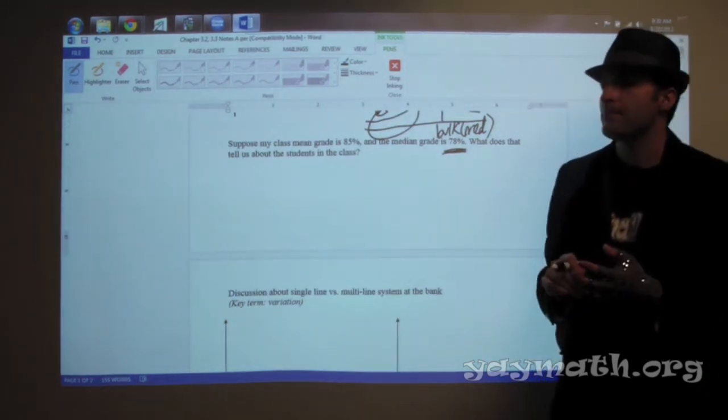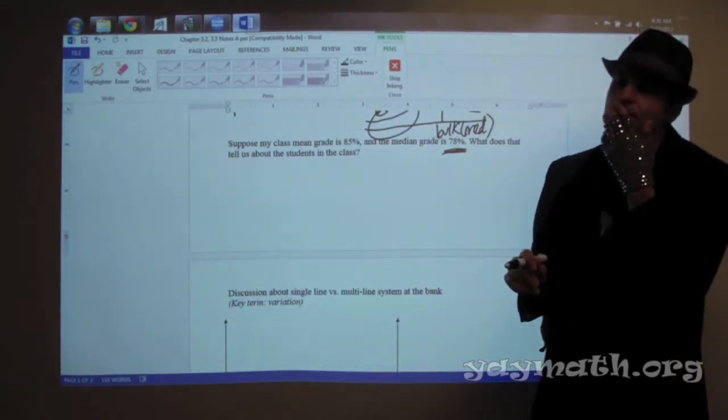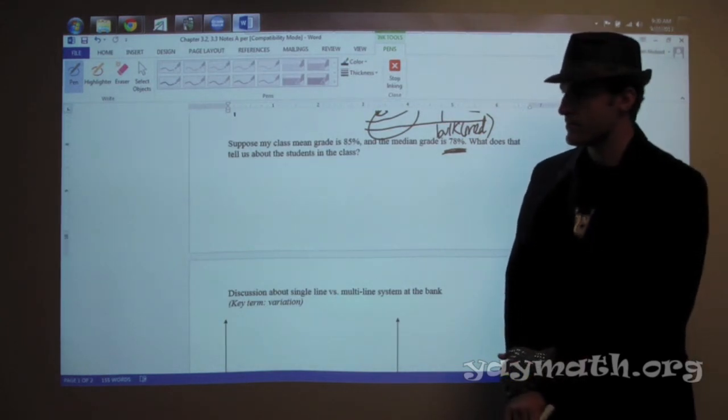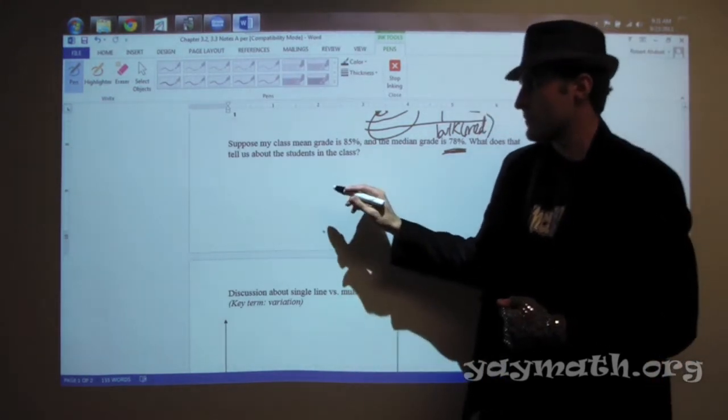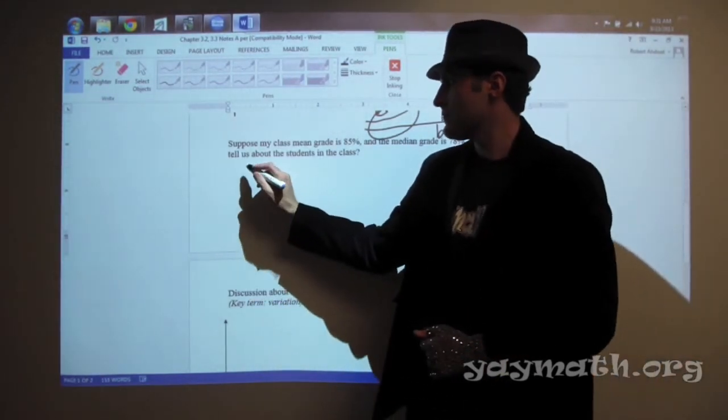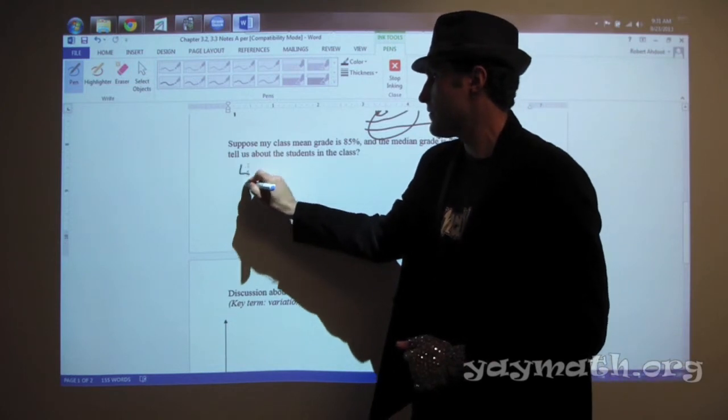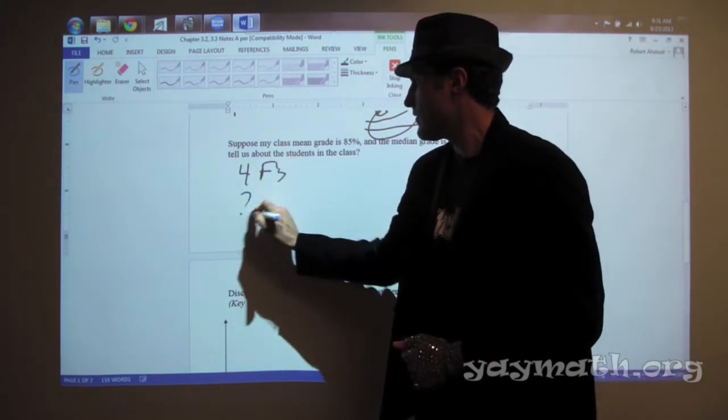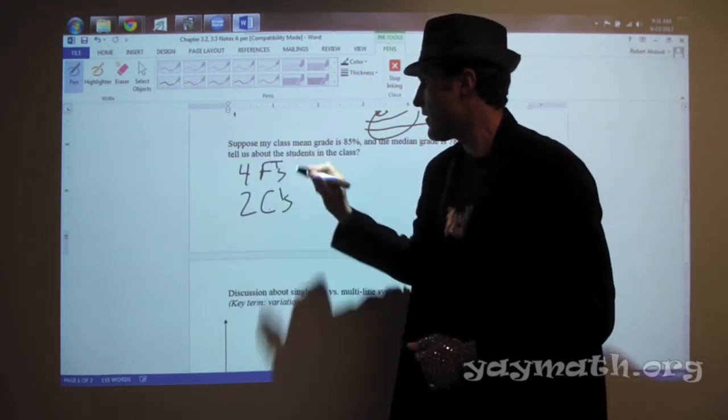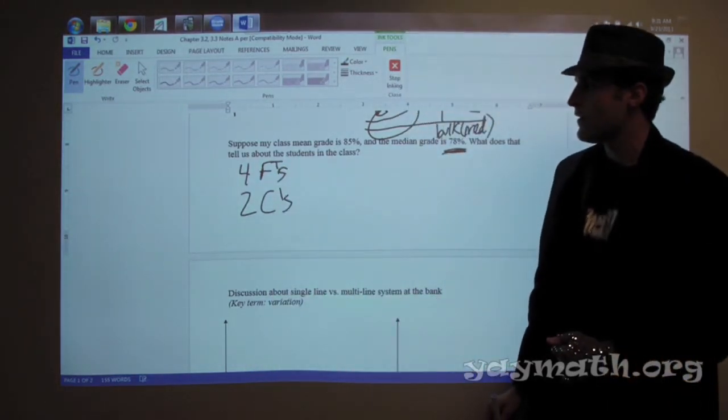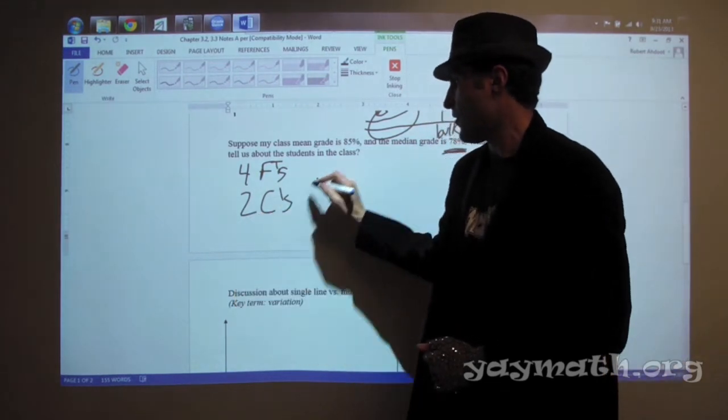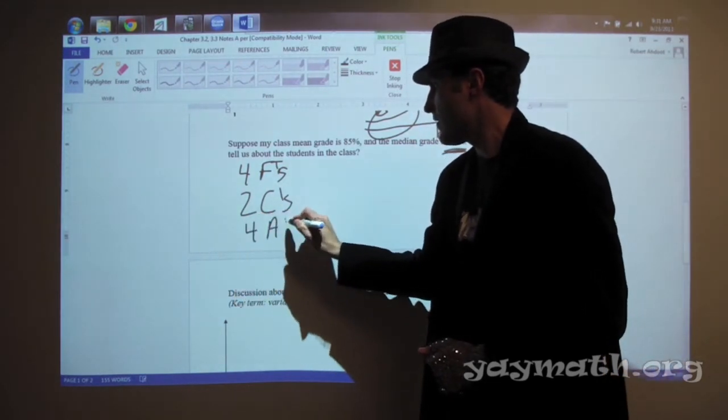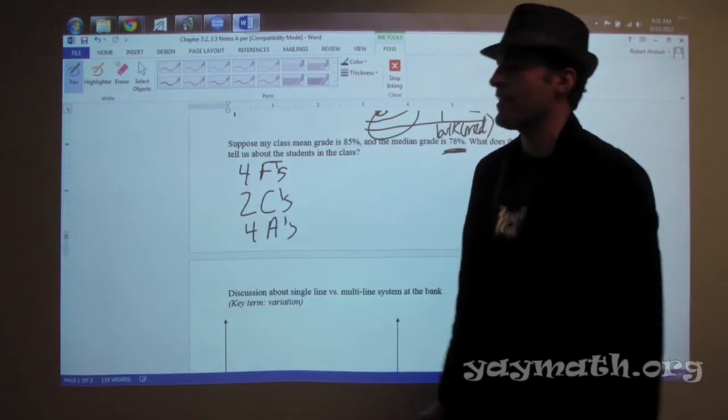For median. Yeah. Like, let's say there's 10 grades, right? Yeah. And there's, like, four Fs in the beginning. Yeah. And then there's two Cs. Okay. I don't know if this will work out. Two Cs. Yeah. So, and then four As.